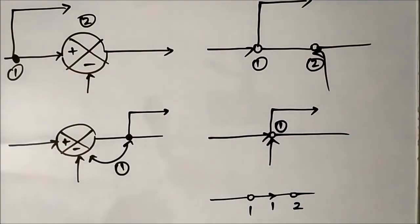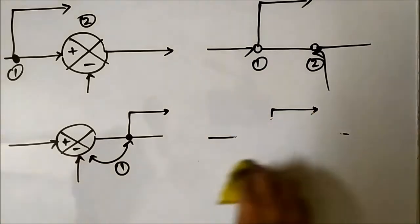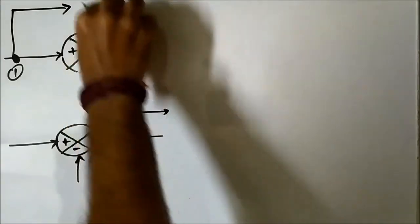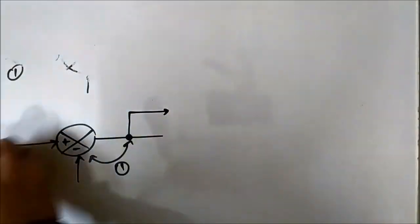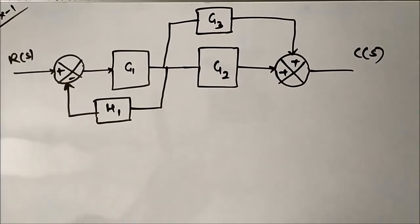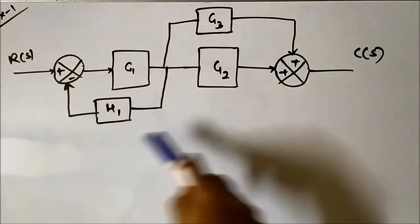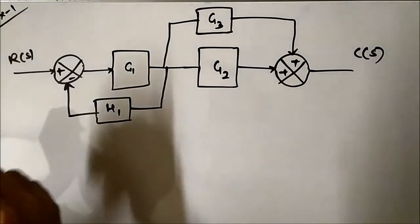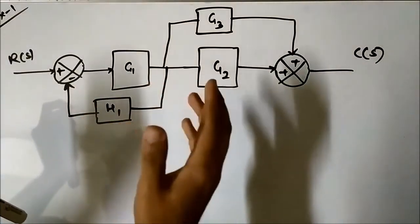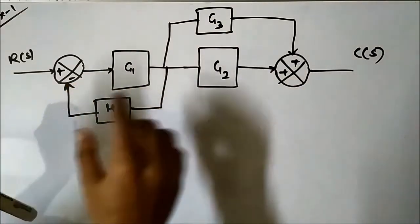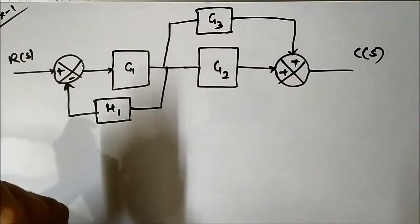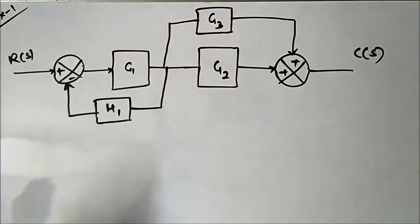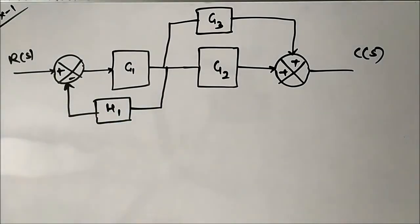So let us now see how the block diagram to signal flow graph conversion takes place with the help of some small examples. Here is a small example to discuss block diagram to signal flow graph conversion. We have a small block diagram which consists of summing points, blocks, forward path, feedback blocks, and takeoff points.